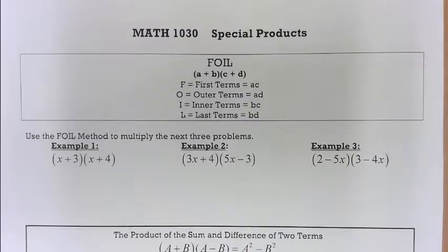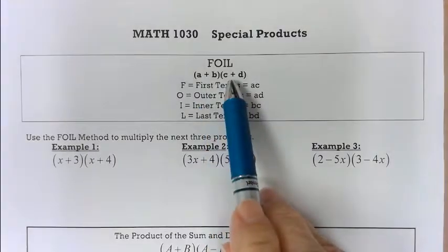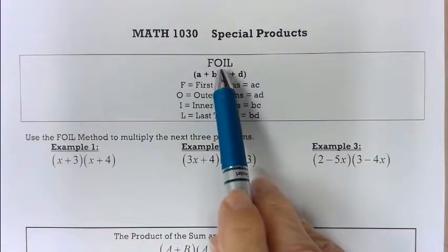In this section we look at special products, referred to as FOIL in the prior video, but here it is spelled out. If I've got a binomial times a binomial, and this is all that FOIL works for.